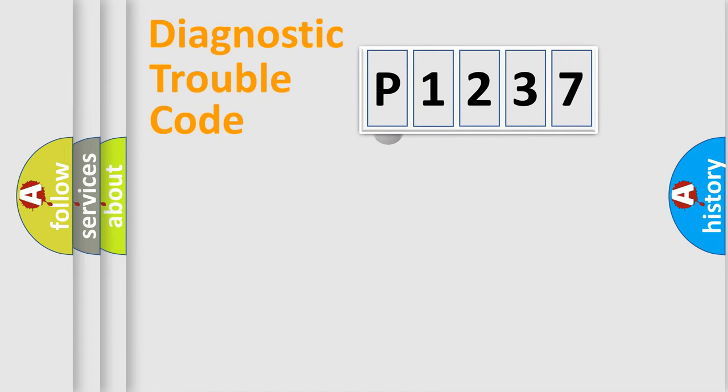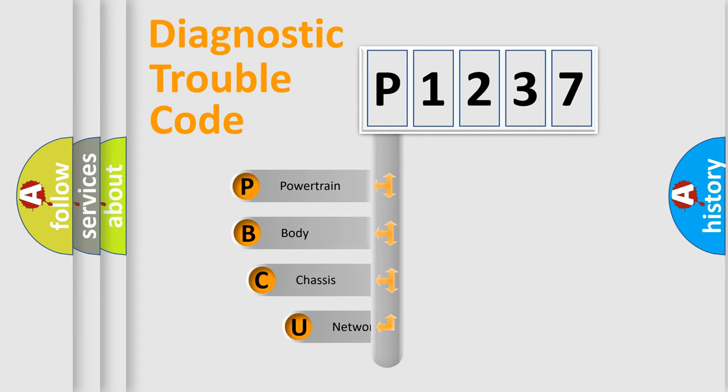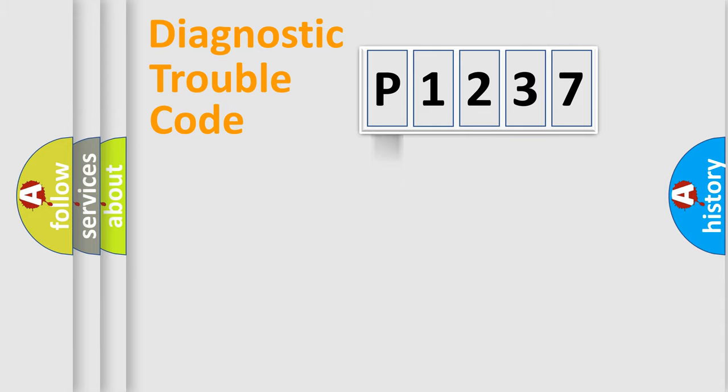First, let's look at the history of diagnostic fault code composition according to the OBD2 protocol, which is unified for all automakers since 2000. We divide the electric system of automobile into four basic units: Powertrain, Body, Chassis, and Network.